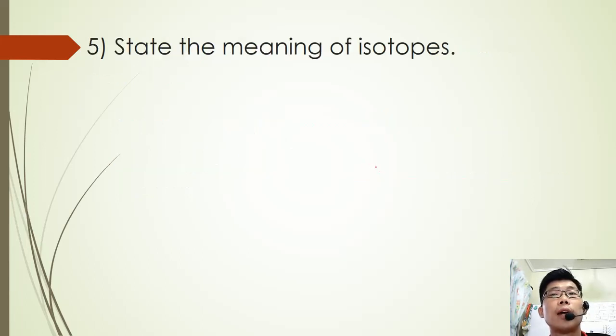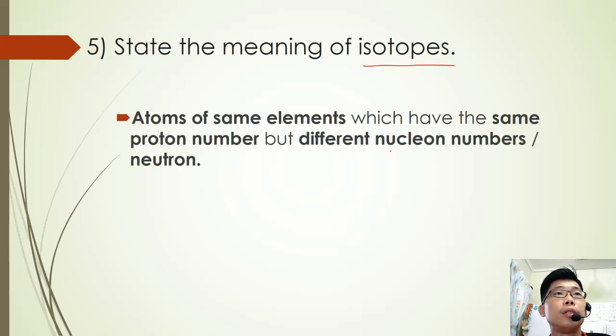State the meaning of isotopes. Isotopes refer to atoms of same elements which have the same proton number but different nucleon number or different neutrons.